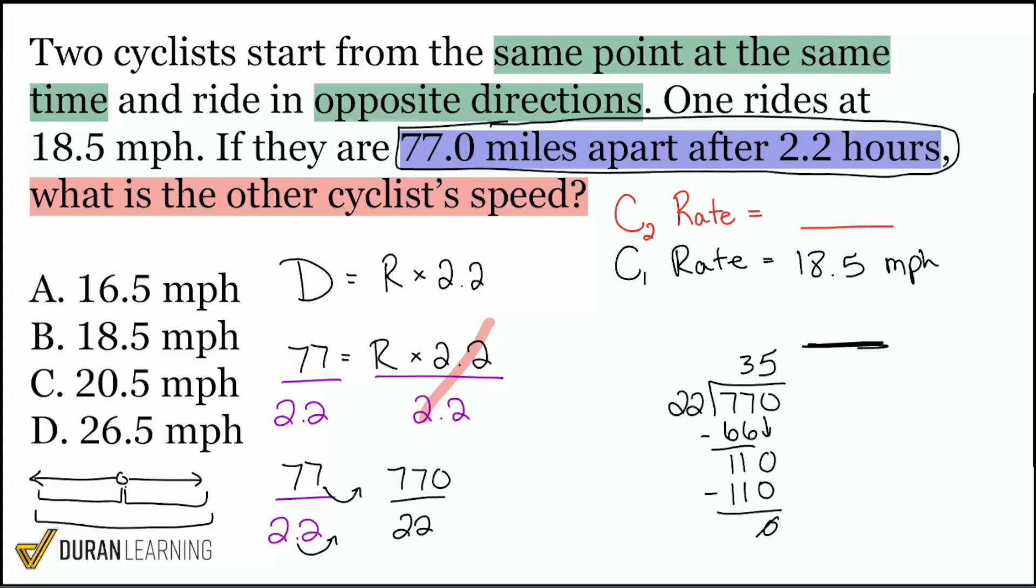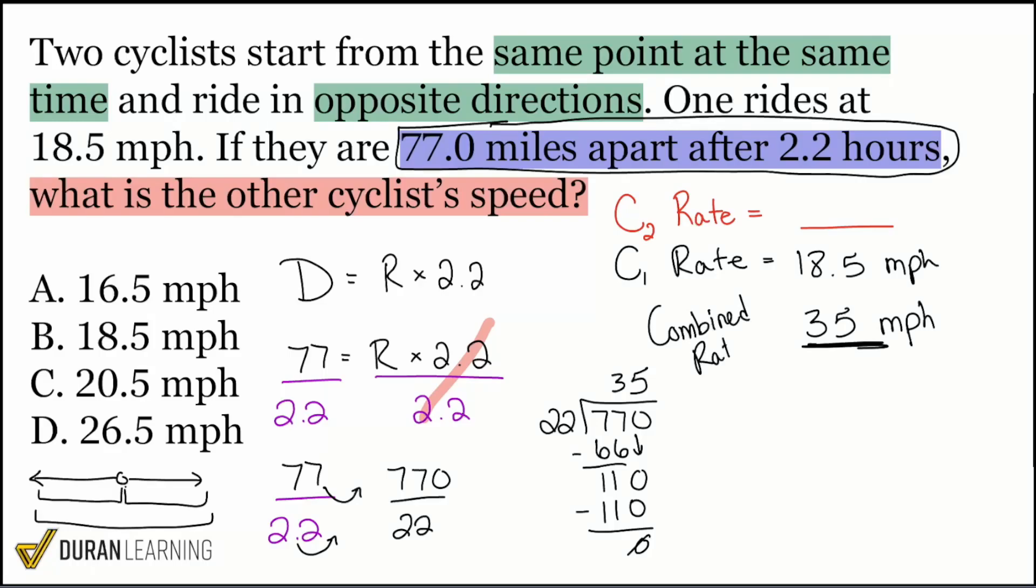Guess what just happened, my party people? We just found that combined rate. It is 35 miles per hour. This is the combined rate right there. And think about it, everybody. We got here through this calculation. But what do we understand about this? We understand that the first rate plus the second rate gives us the combined rate in this situation. So if we wanted to work backwards, we would subtract.